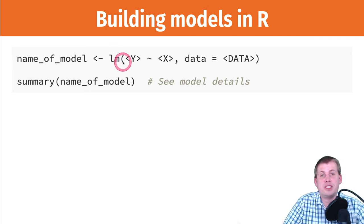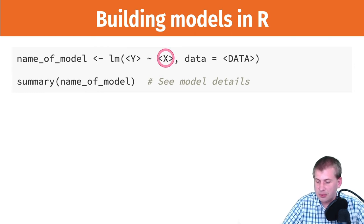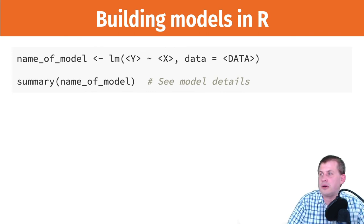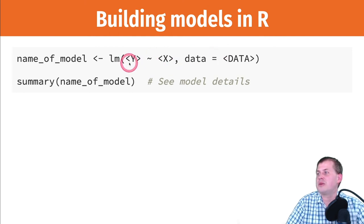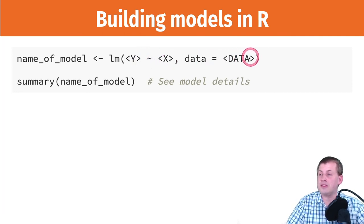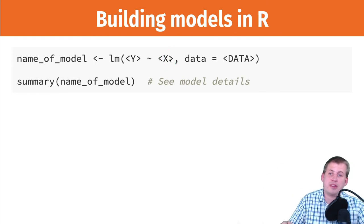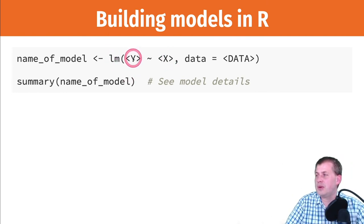In R, you use the function lm(), which stands for linear model. The syntax is: your y variable, then a tilde sign (shift + tilde key by the number one), then your x variable. I like to read the tilde as 'is explained by,' so: happiness is explained by cookies. You tell R the name of your data set. You can add multiple x's — we'll talk about that in a minute.